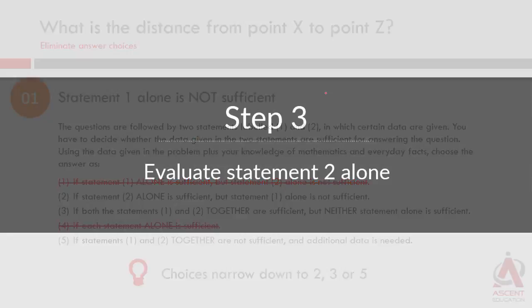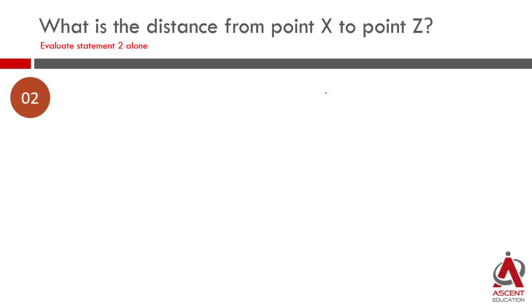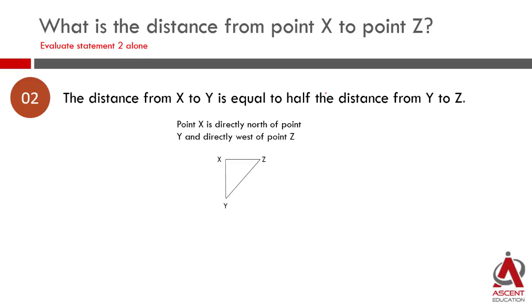Now let us look at statement 2. Statement 2: the distance from X to Y is equal to half the distance from Y to Z. This is what we have. XYZ is basically forming a right triangle right angled at X. So if we have a right triangle, this is what we have.